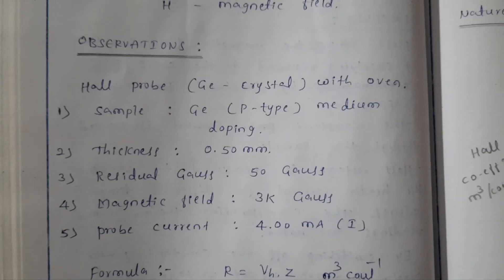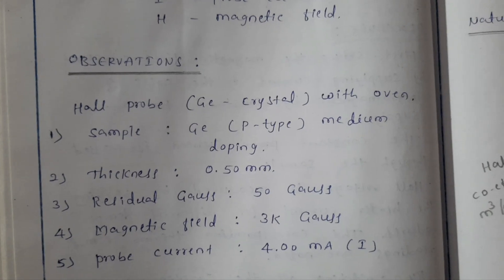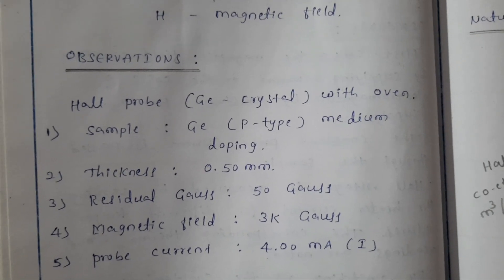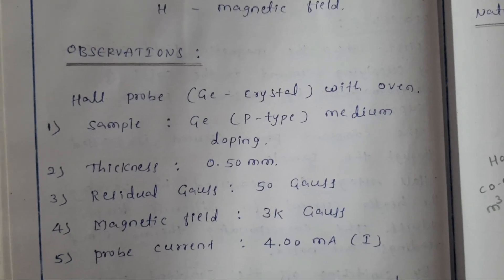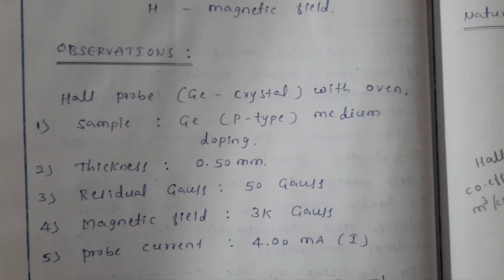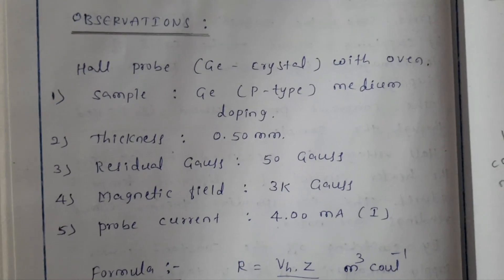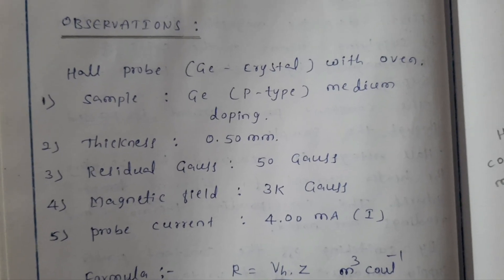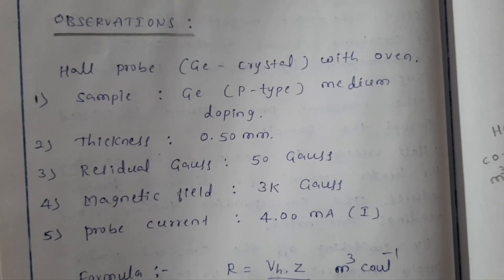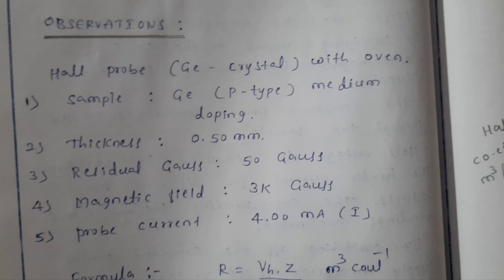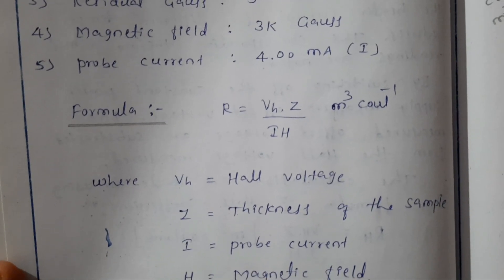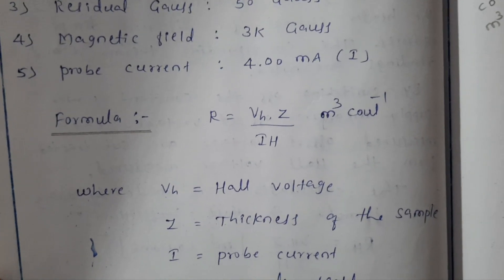We have to note on the observation Hall probe — that is, a germanium crystal within the oven. The sample is a germanium P-type with medium doping and thickness of 0.5 mm. Here is the formula to calculate the Hall coefficient: R is equal to VH multiplied by Z, divided by I multiplied by H.